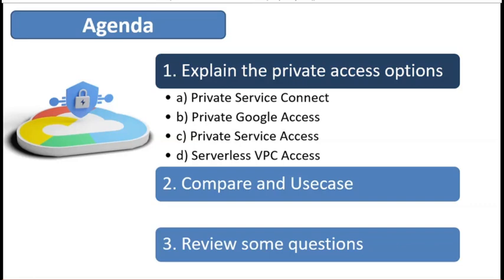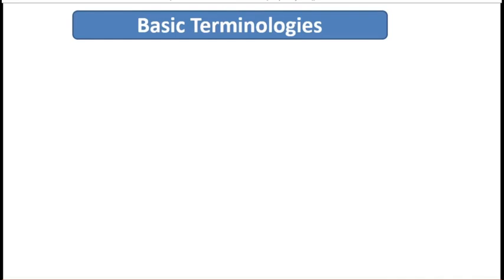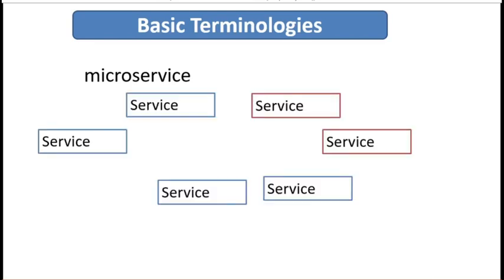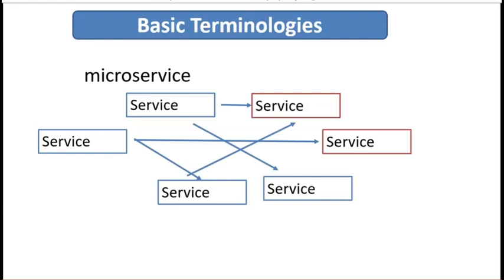Let's move on to number one. Before going into detail, let's start with some basic terminology. In modern architecture, you will often hear about microservices. Microservices have various benefits — they can be independently deployable and scalable, among many more. In the microservice architecture, applications are built and deployed in highly decoupled small components, each focused on a single service. You can see here multiple services, and each of these components connects to each other to complete one complete process.